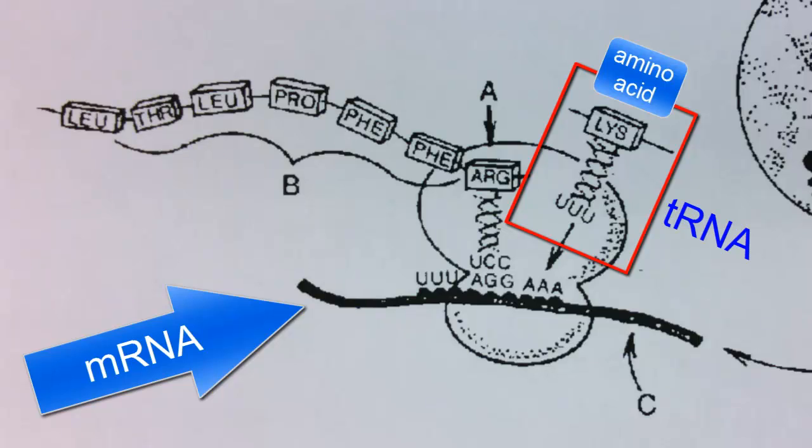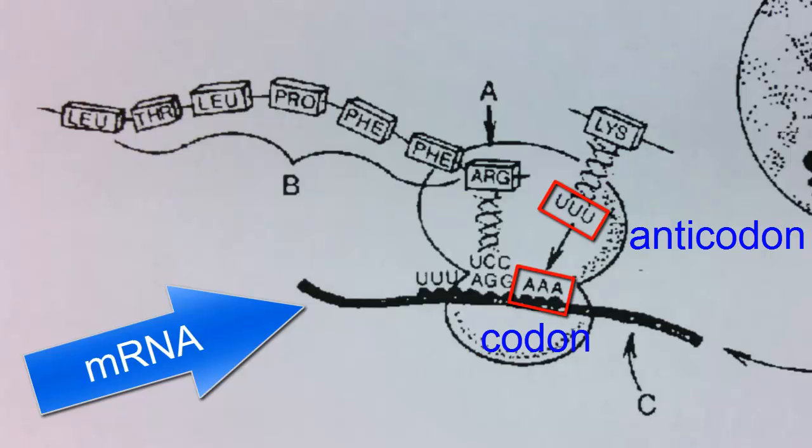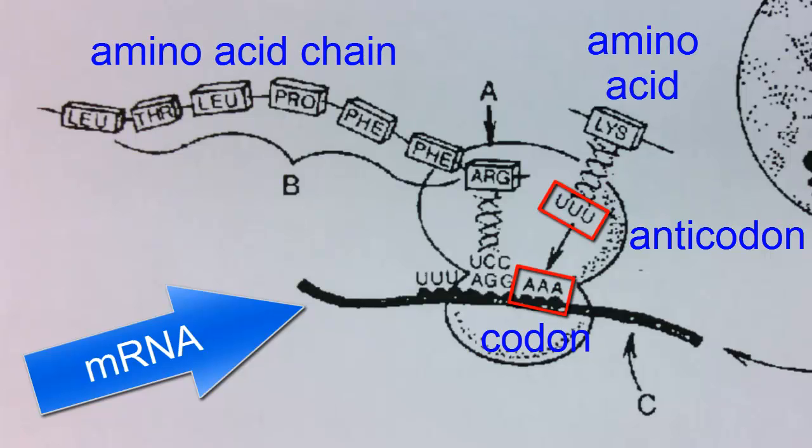Transfer RNA picks up specific amino acids and has an anticodon, a three base sequence, which is complementary to the codons. So the correct amino acids are put into place because each transfer RNA brings the amino acid to the ribosome, and the anticodon matches up with the correct codon on the mRNA.